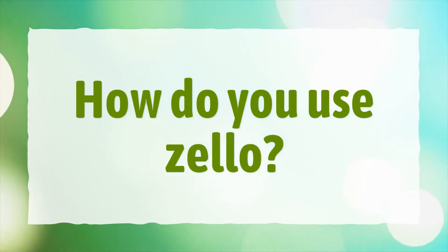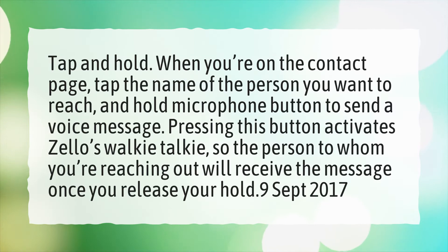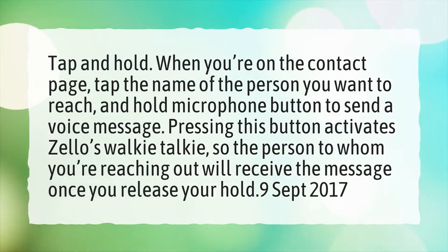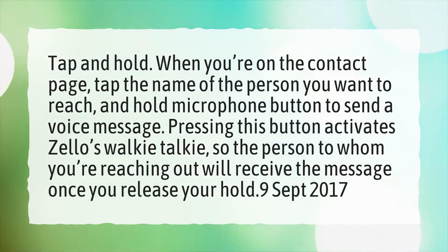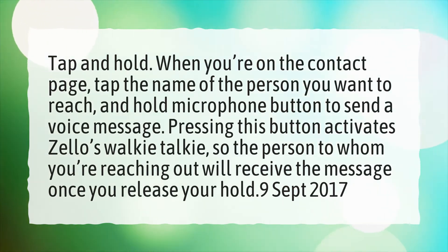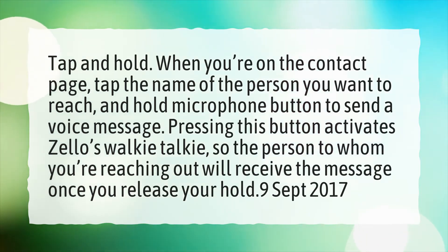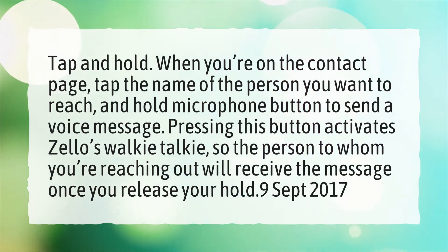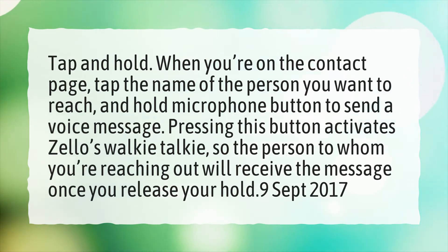How do you use Zello? Tap and hold. When you're on the contact page, tap the name of the person you want to reach, and hold the microphone button to send a voice message. Pressing this button activates Zello's walkie-talkie, so the person you're reaching out to will receive the message once you release your hold.